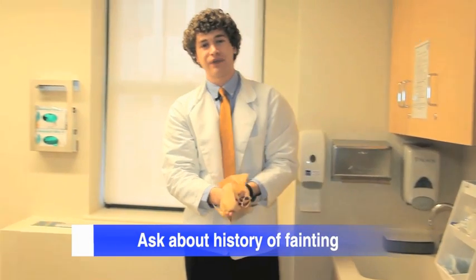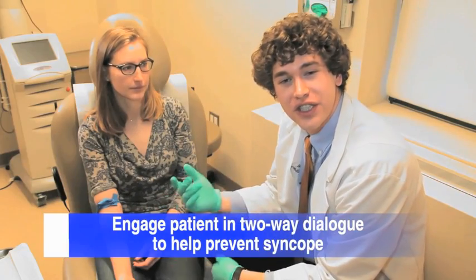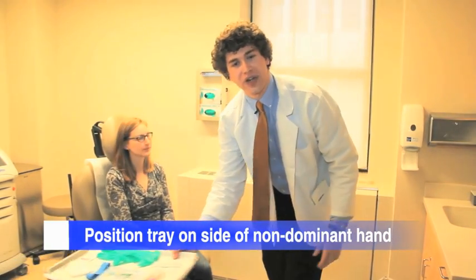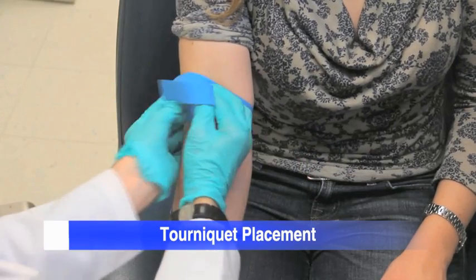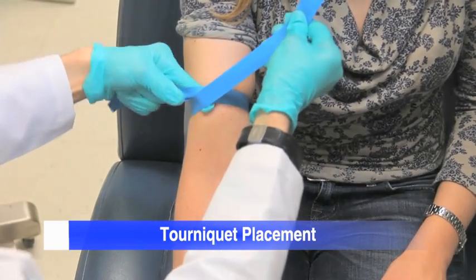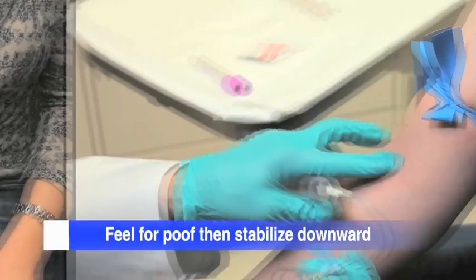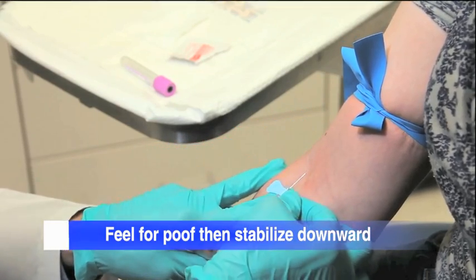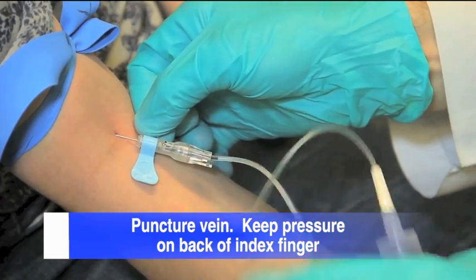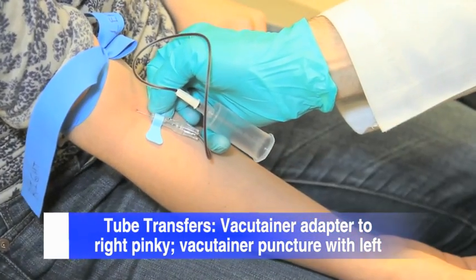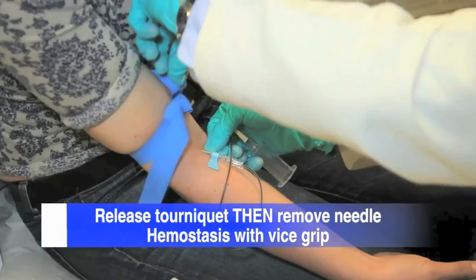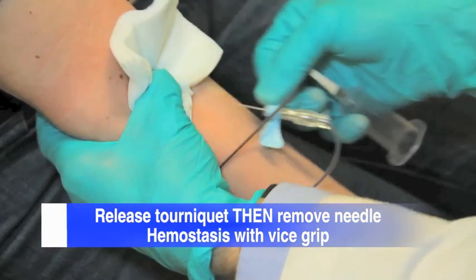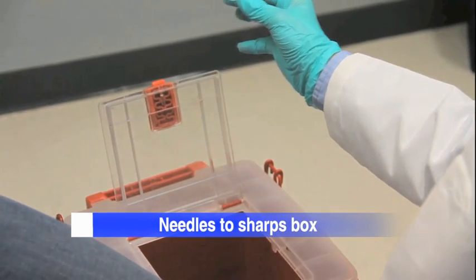Key points to remember: Ask the patient if they have ever fainted while giving blood. Maintain a conversation with the patient during the procedure to monitor for signs of syncope. The tray should be on the side of your non-dominant hand. Use the nine-step tourniquet placement. Insert the needle with a quick thrust while maintaining pressure. Grasp the adapter with your right pinky when changing vacutainer tubes. Release the tourniquet before removing the needle. Maintain a vice grip to prevent bruising. Always dispose of the needle in a sharps box.